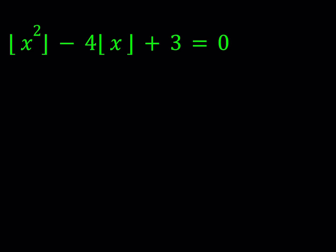First of all, notice that this problem does not have any negative solutions. Why is that? Because if you isolate the floor value of x squared, you're going to notice it equals 4 times the floor value of x minus 3. So if x is less than 0, then 4 times the floor value of x is going to be negative, and the right-hand side is going to be negative when the left-hand side is positive. Therefore, we're not going to have any negative solutions.